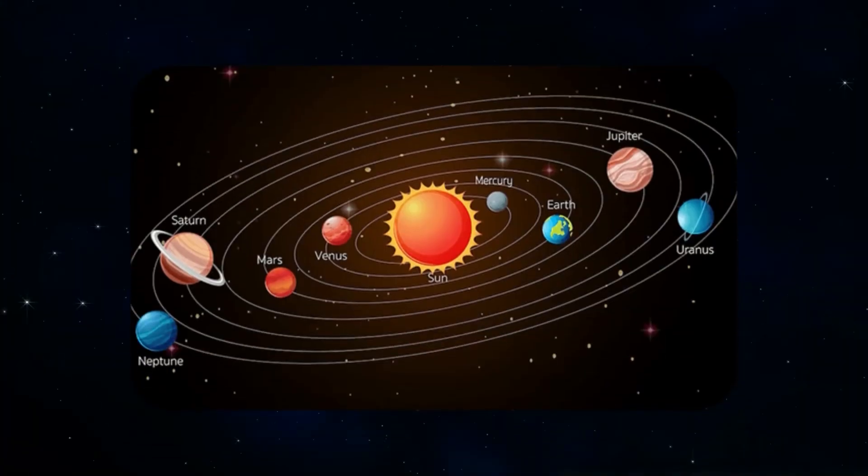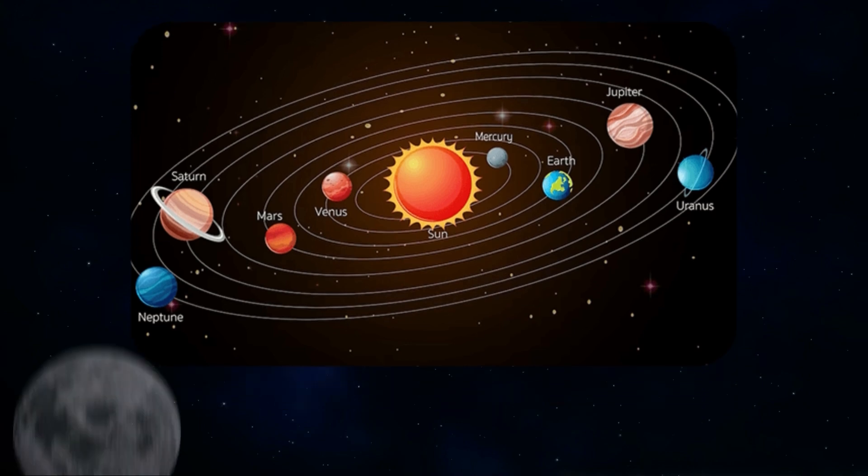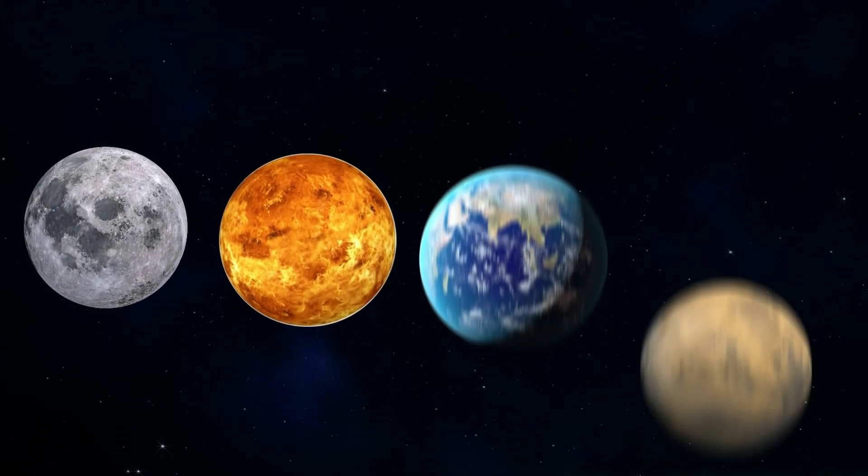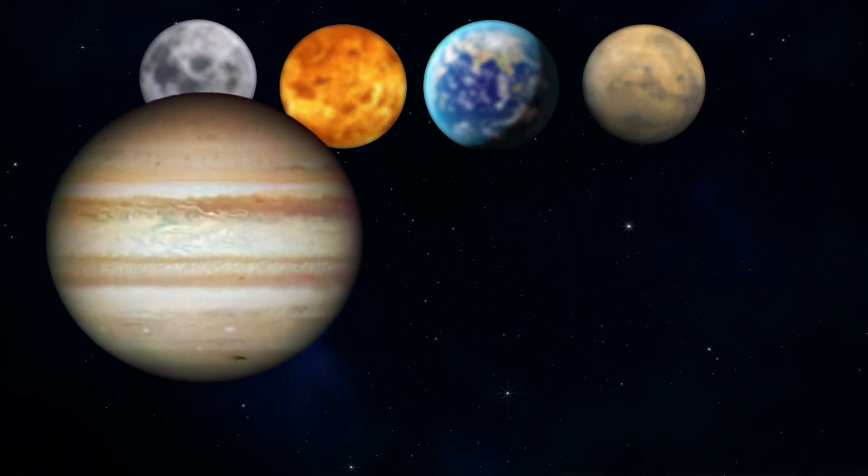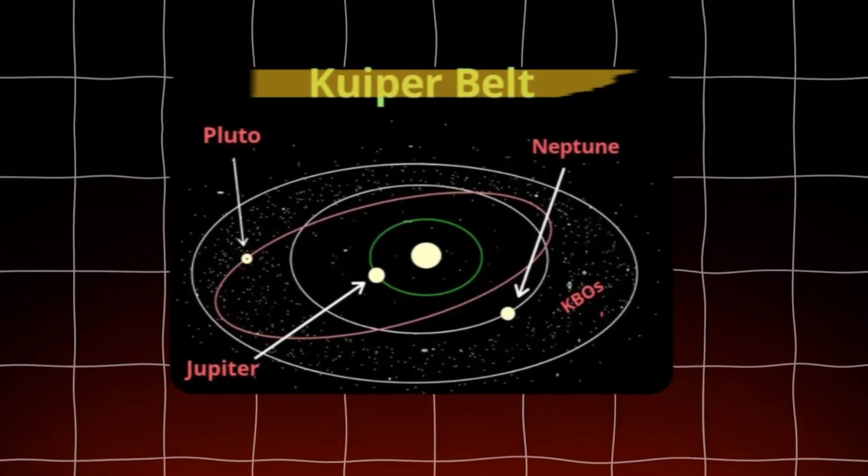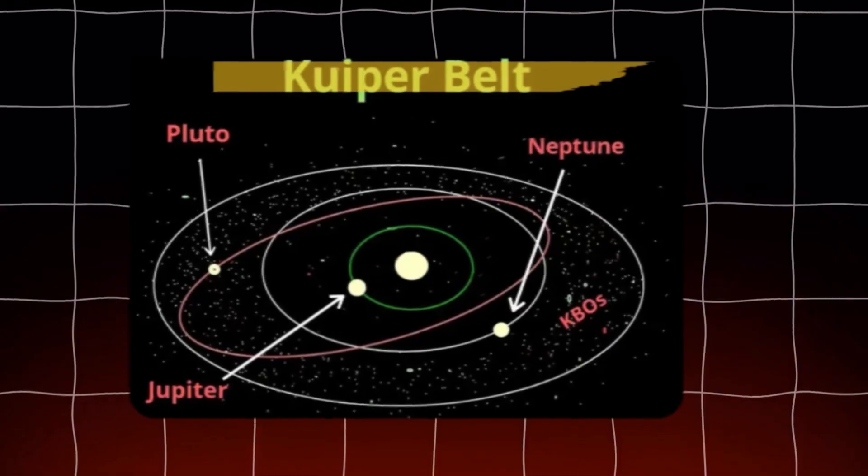Our solar system is a paragon of celestial organization. From the rocky inner planets like Mercury, Venus, Earth, and Mars, to the majestic gas giants like Jupiter and Saturn, and even the distant icy Kuiper belt, everything orbits the sun in the same plane.